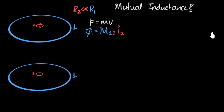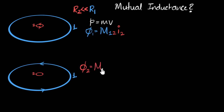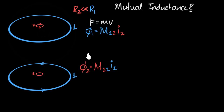The other way is to pass current through the outer coil and calculate the flux through the inner coil. So flux through the inner coil equals the mutual inductance of the inner coil with respect to the outer coil, multiplied by the current in the outer coil. To calculate the mutual inductances, all we need to do is calculate the flux. The question is: which approach should we go for? We should go for the one where the flux calculation is the easiest. Pause and think about which case is simpler and why.